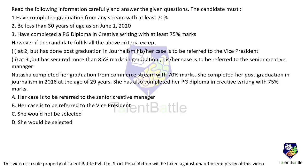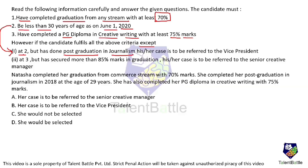We'll see one more example from the concept of attention to details. The criteria for selecting a candidate: the candidate must have completed graduation from any stream with at least 70%, be less than 30 years of age on June 1, 2020, and have completed a PG diploma in creative writing with at least 75%. However, if the candidate fulfills all criteria except criterion 2 but has done a post-graduation in journalism, the case will be referred to the Vice President. If criterion 3 is not met but the candidate secured 85% or more in graduation, the case is referred to the Senior Creative Manager.